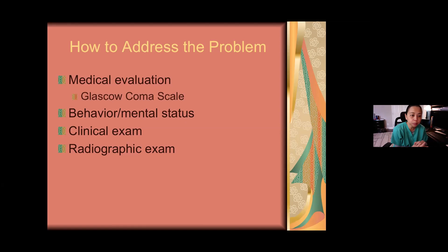If they're at a 12 or 11 on the Glasgow Coma Scale, you need to get them out of your office and send them to the ER or call an ambulance. You also want to determine their behavior and mental status — are they not exhibiting pain when you'd expect it? Maybe the adrenaline is still there. Are they being violent or calm? That's going to come into play with how you deliver care. Then you'll do a clinical exam and a radiographic exam.